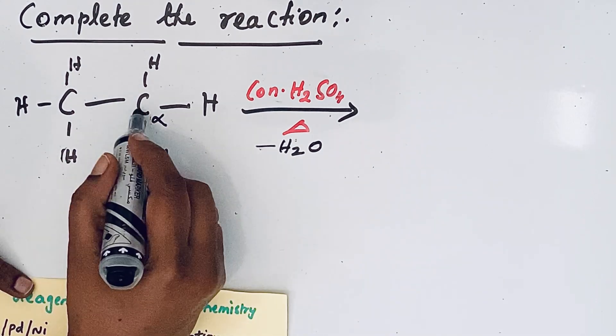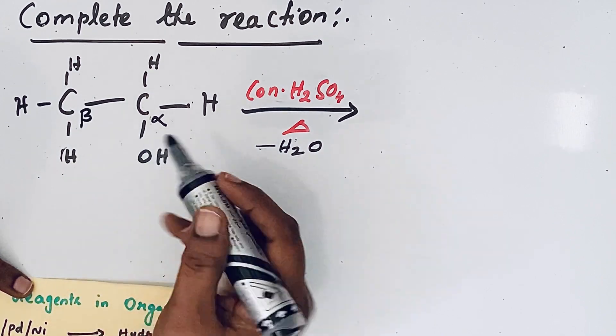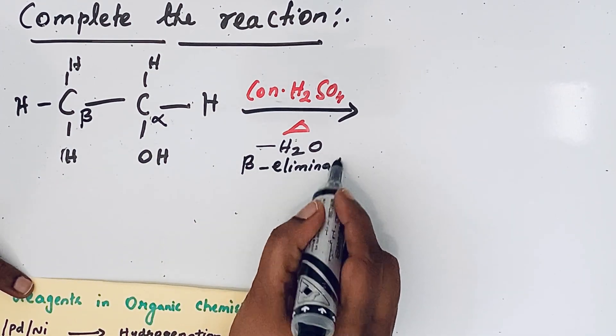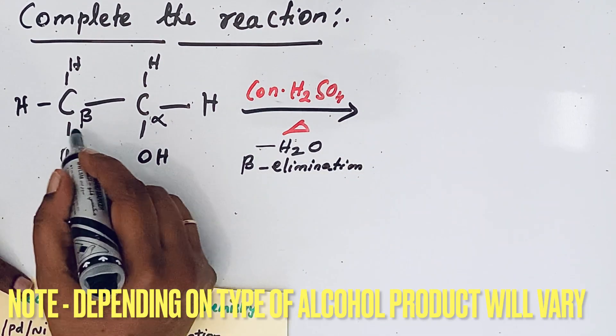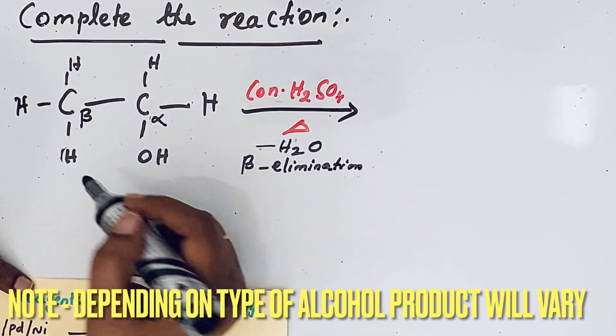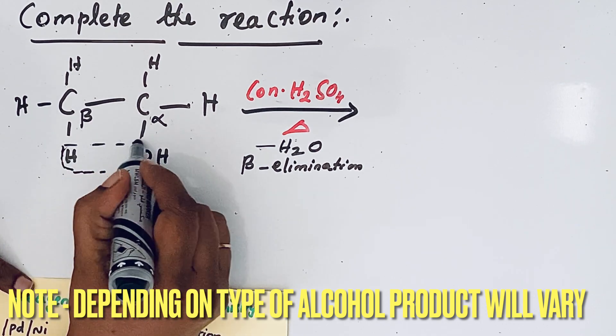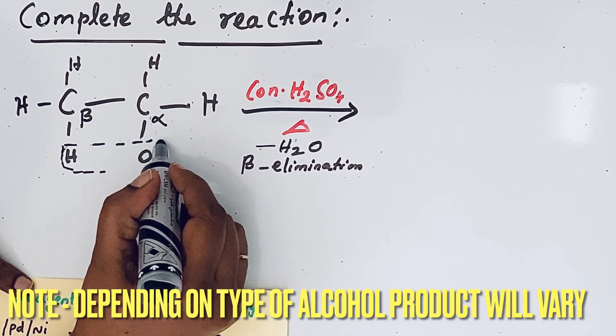The carbon which is next to the alpha carbon is the beta carbon. So in beta elimination, the hydrogen atom is removed from the beta carbon. That means this hydrogen and the OH from the alpha carbon are removed.